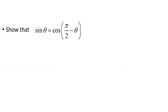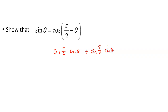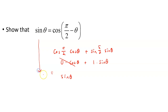Sine and cosine are complementary functions, so sine of theta equals cosine of pi over 2 minus theta. Let's verify this using the difference formula for cosine: cosine of pi over 2 minus theta equals cosine(pi/2)cosine(theta) plus sine(pi/2)sine(theta). Cosine of pi over 2 is 0, and sine of pi over 2 is 1, so this simplifies to 0 times cosine theta plus 1 times sine theta, which equals sine theta. You can do identities with these formulas as well.